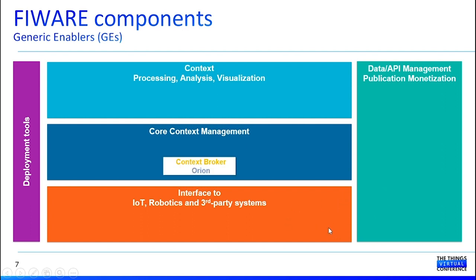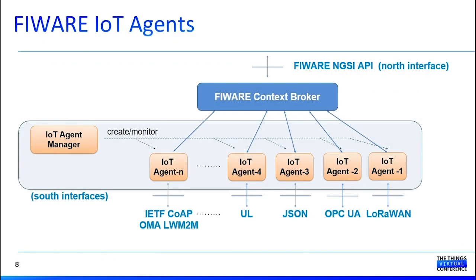In this presentation, we are going to be focused on two of the generic enablers from FIWARE. The first one is the Context Broker, included in the core context management block, which is the core component in charge of managing the context of the data. We will also show you the IoT agents — specifically, the LoRaWAN IoT agent. You can see the different IoT agents provided by FIWARE currently.